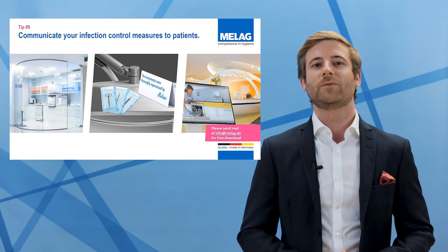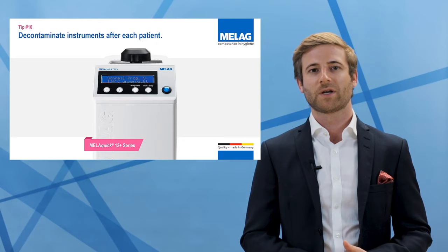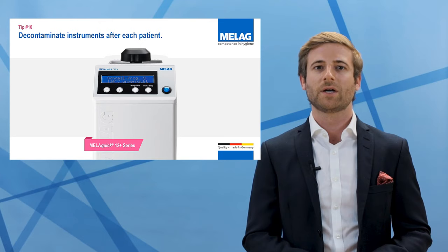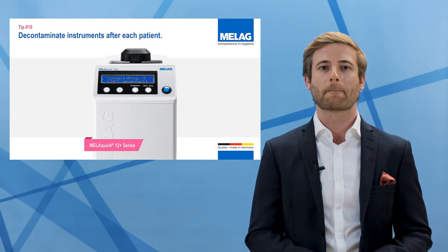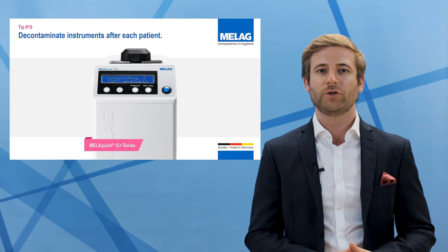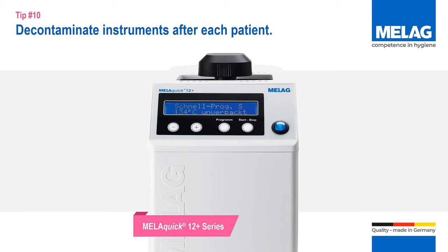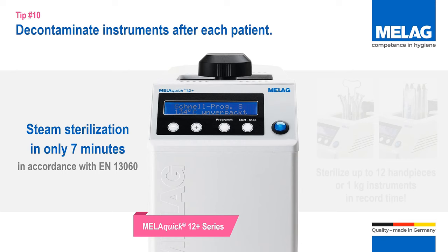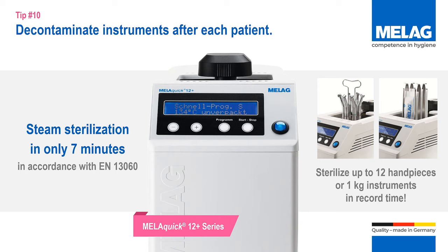Now we are at our last point, tip number 10: reprocessing after every patient. Reprocessing after every patient can be quite challenging, especially if we talk about handpieces. Handpieces are expensive and they are in frequent use. Therefore, we highly recommend that in addition to your main decontamination setup — which consists of a washer disinfector, a sealer, and your main autoclave — you use a small sterilizer. Using a small sterilizer allows you to decontaminate handpieces in only 7 minutes between every patient. This is another small tip to increase the efficiency of your workflow and ensure a safe working environment.